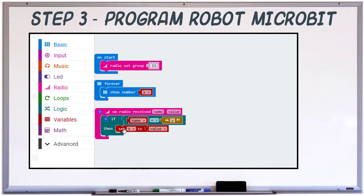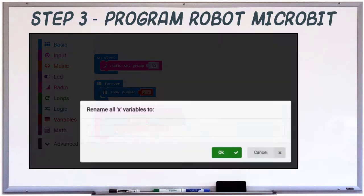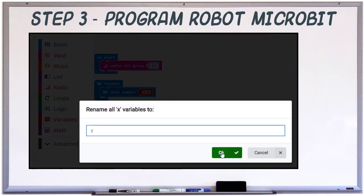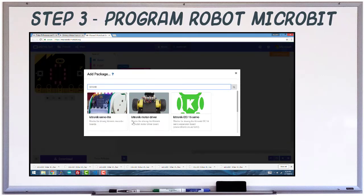Import the robot hex file into the MakeCode website. In the OnRadioReceived event, we're going to set the y variable to the value coming from the other microbit. Install the plug-in for the Katronic motor board.